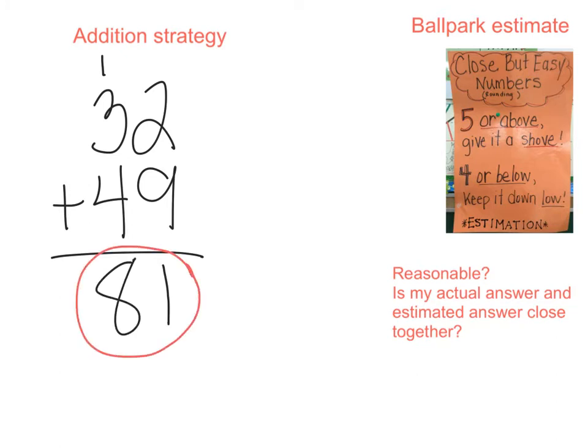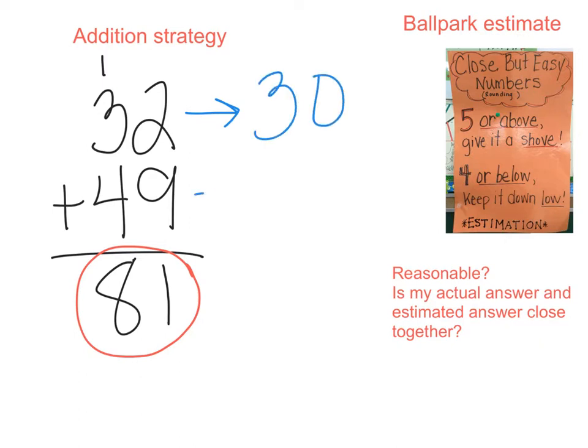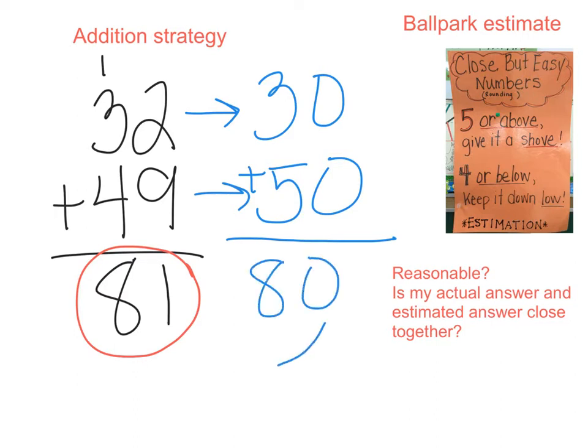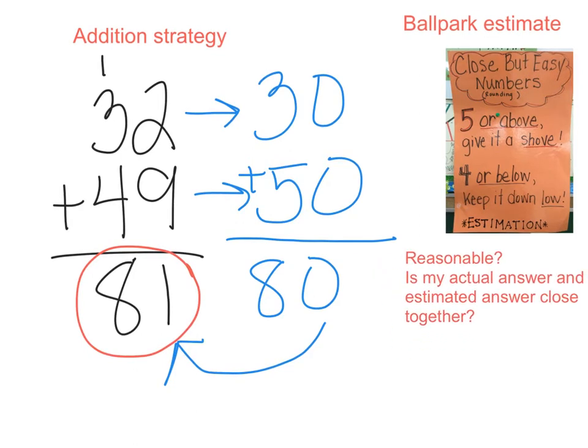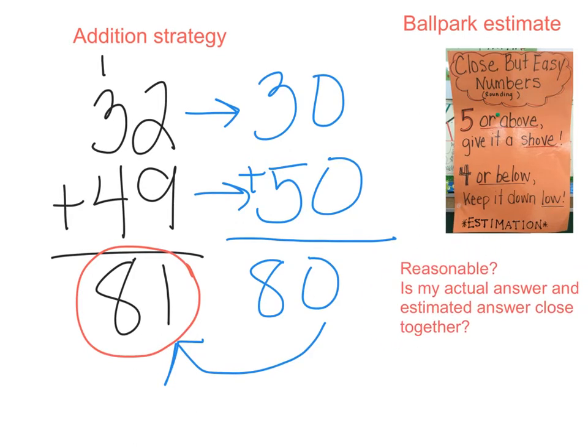But let's use ballpark estimates, a ballpark estimate, to check my answer. Thirty-two rounds to thirty. Forty-nine rounds to fifty. I have my close and easy numbers ending in zero. Let's add thirty and fifty, and I get eighty. Are my numbers close together? Is my answer reasonable? Yes.